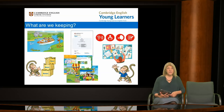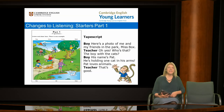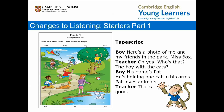I'll now talk you through these changes paper by paper. So let's start with listening. The new Starters Listening Part 1 task is now the same task type as Movers and Flyers Part 1, but targeted at pre-A1 level. Instead of placing objects on a picture, children will now identify the people in the scene. You might remember that the current task focuses on the testing of prepositions, but this is also tested in Part 4 of Starters Listening.